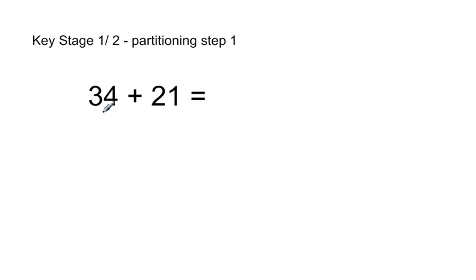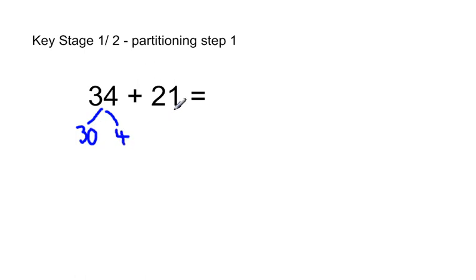The next stage, we come away from using a number line and we partition both the numbers. So with 34, we partition it to 30 and 4, and 21 is 20 and 1.